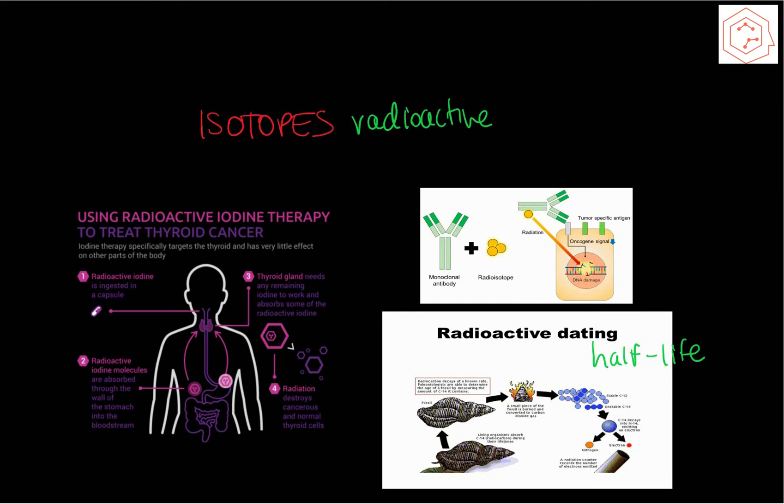Scientists also use a radiation counter to assist in the dating process. In a second application, there's something called radioactive tracing, which uses radioactive tracers. These are radioisotopes that are used to follow chemicals through chemical reactions and trace their path as they move through the bodies of various organisms. These also have numerous medical applications. For example, iodine-131 is an isotope used to identify the presence of cancer cells in the thyroid gland.